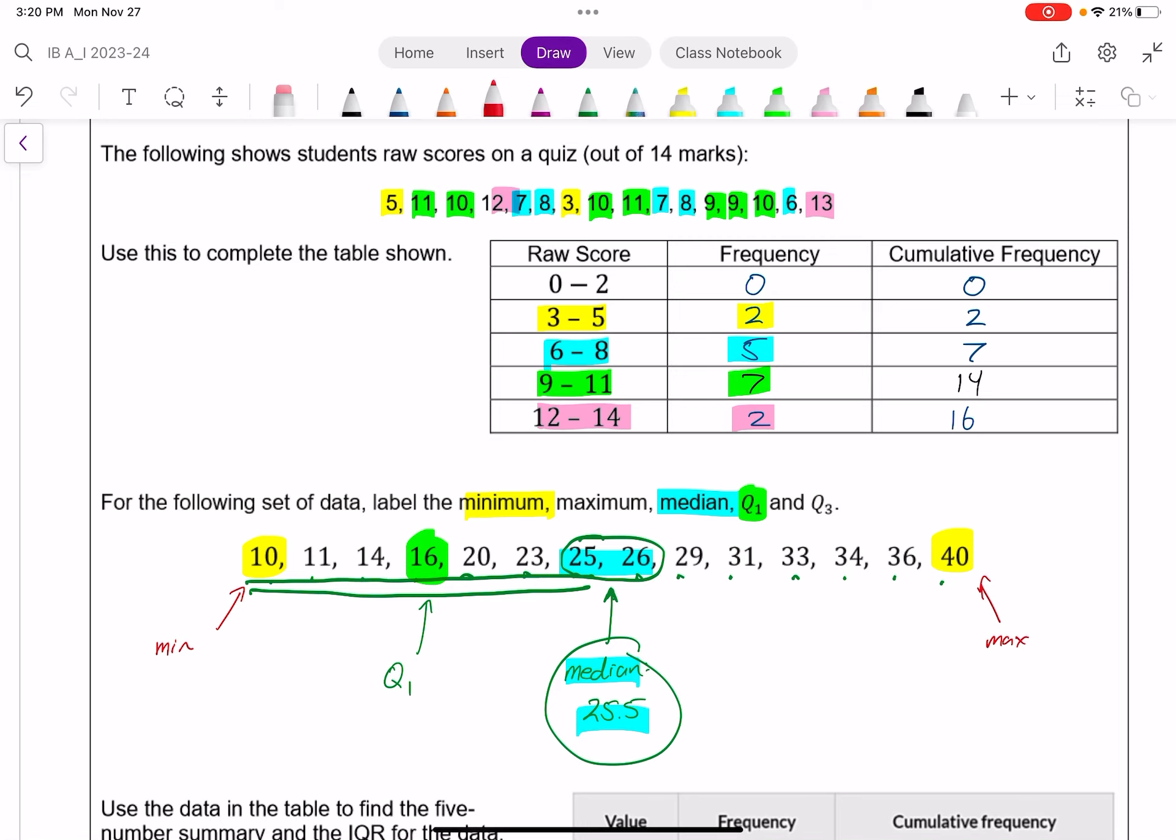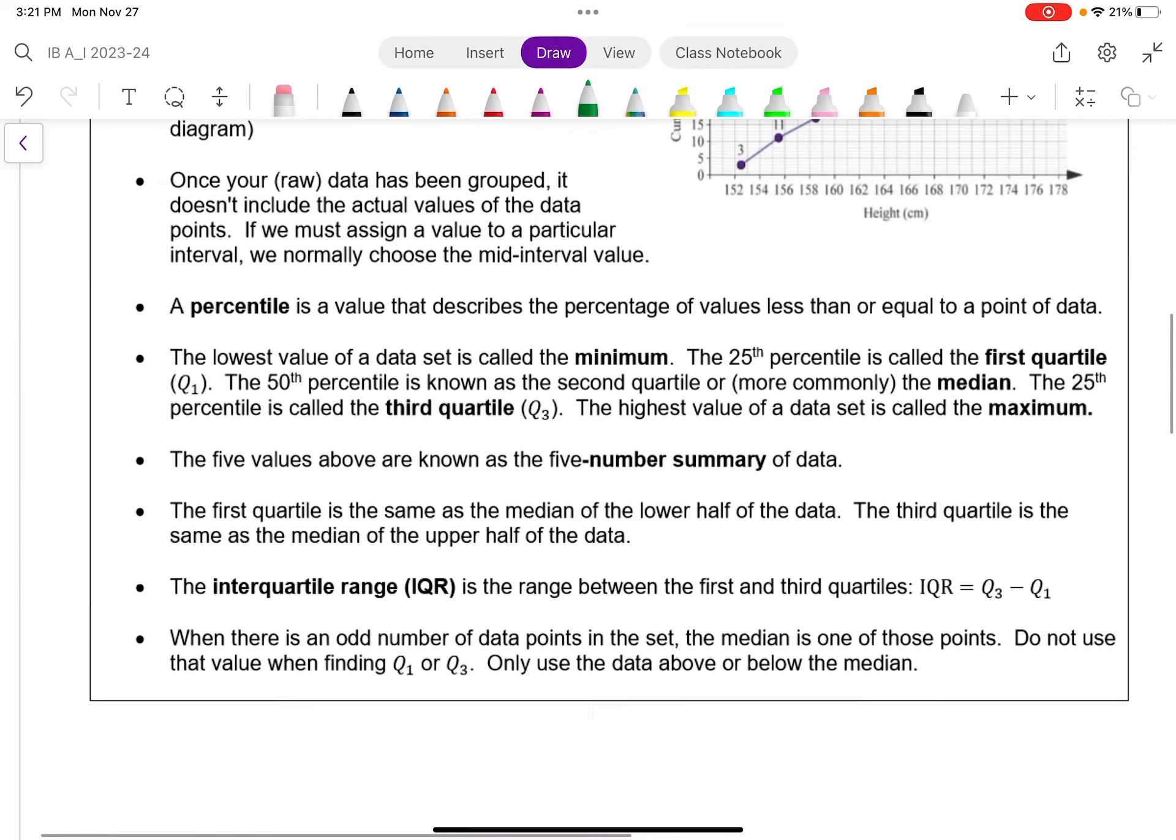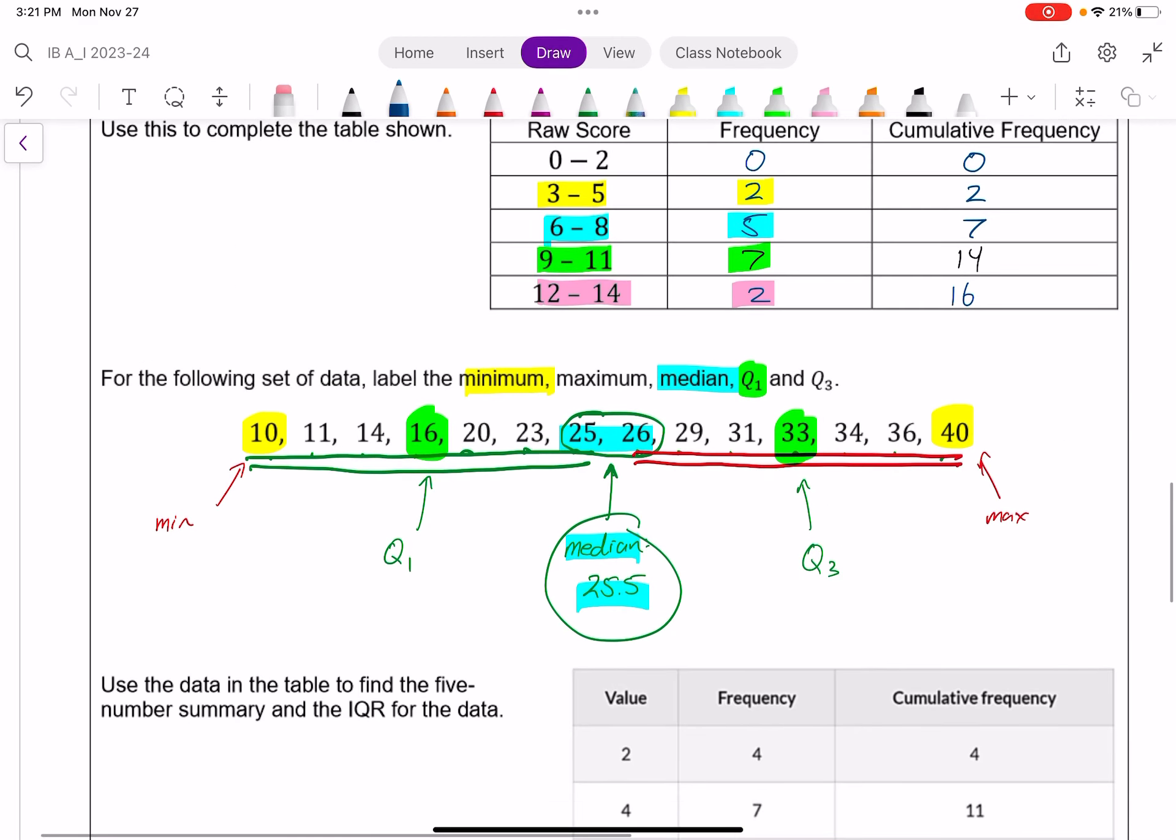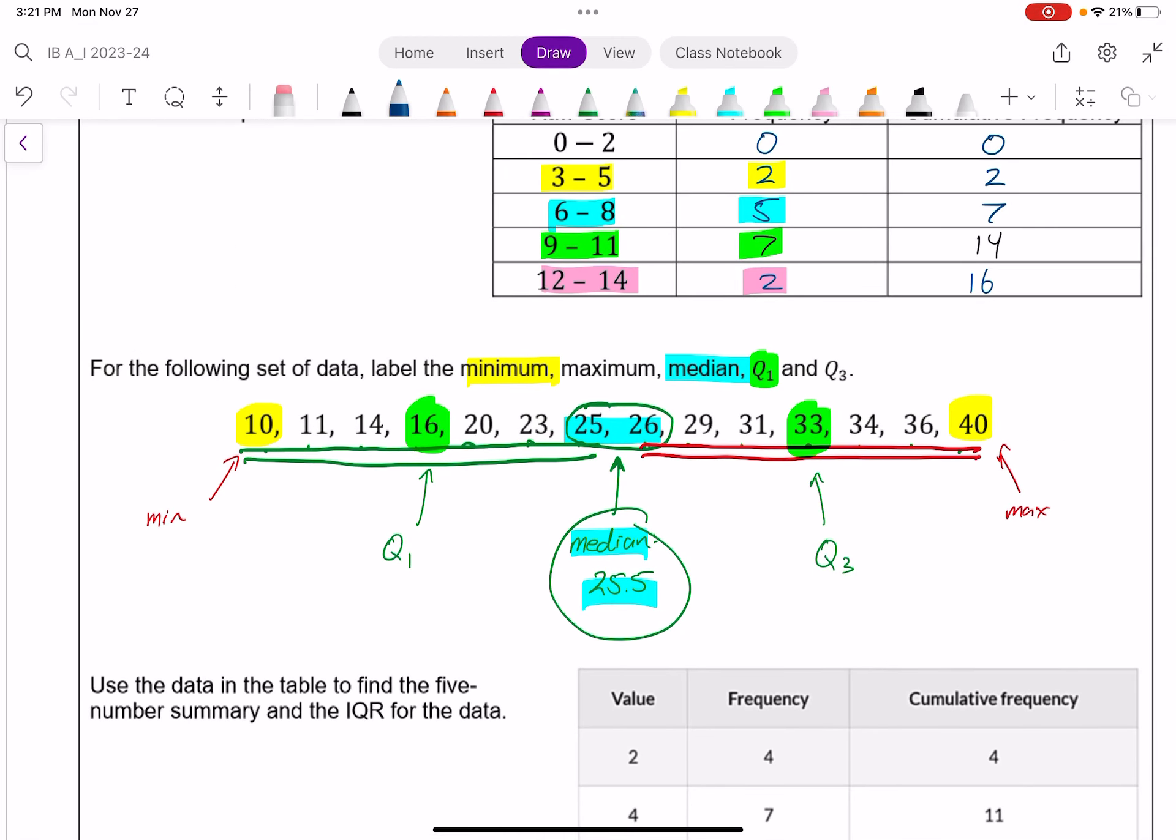And the third quartile is the median of the top half of our data, these seven values. And because it's an odd number, there should be a value in the middle. In this case, it's 33. 33 is our third quartile. All of these values together, we call the five-number summary. All of which we can see I have talked about right here in this bullet point.